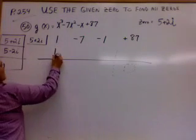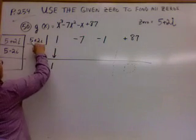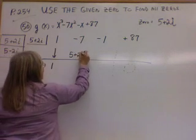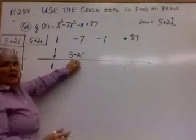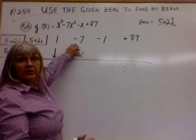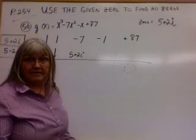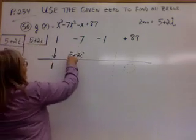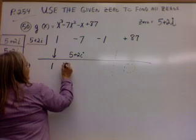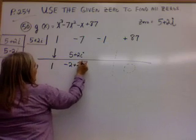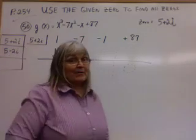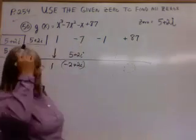Bring down the one. Five plus two i times one is five plus two i. Oh no. I have an imaginary number to add with a regular real number. Can you do that? Of course you can. And it's pretty easy. Five minus seven is negative two, plus two i.